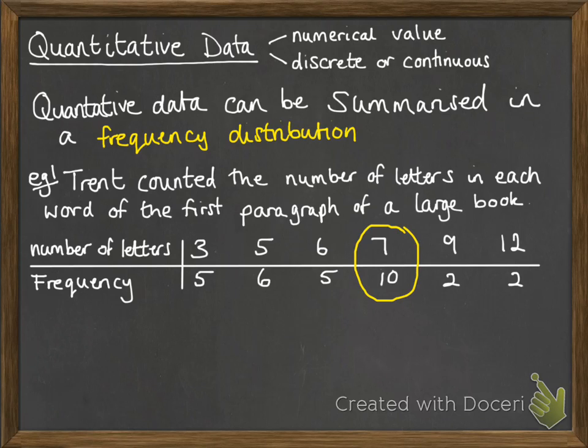This here means that we had ten words that had seven letters in them, or two words that had twelve letters in it, and five words that had three letters and so on. That's how you read that table.